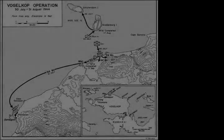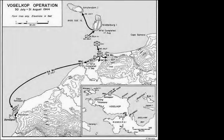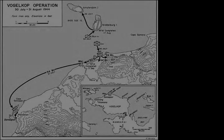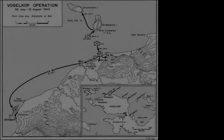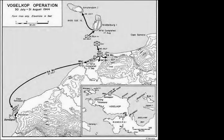A covering force consisting of one heavy cruiser, two light cruisers, and nine destroyers under the command of Admiral Russell Berkey was to be available for support fire if needed.